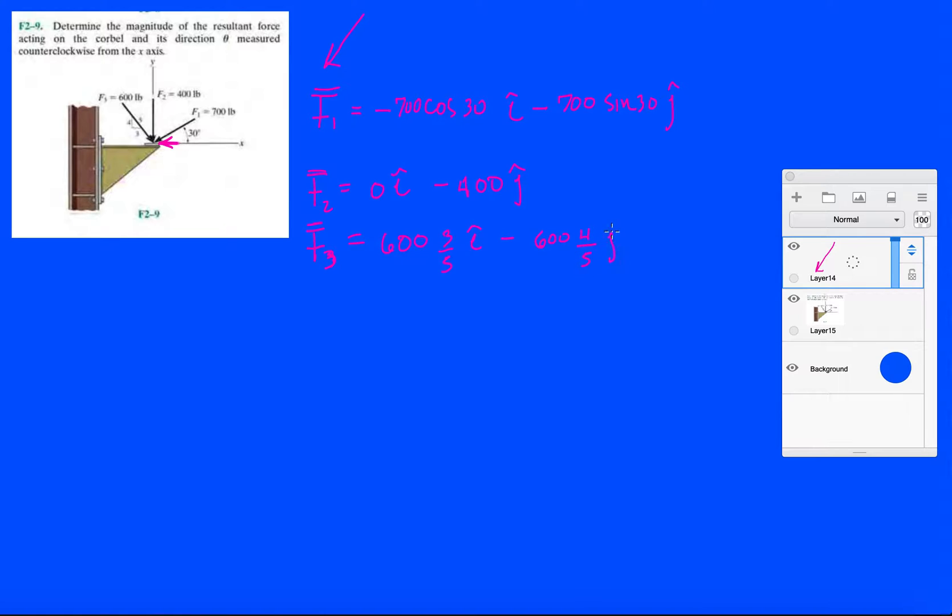Now let's add up all the x's, add up all the y's, and let's see what we got. So resultant force - all the forces in the x will give me my resultant force in the x. That's gonna be minus 700 times cosine 30, so minus 606.2, plus zero, plus 600 times 3 divided by 5, plus 360. So minus 606.2 plus 360 - yeah, so minus 246.2 pounds. That's my resultant in the x direction.